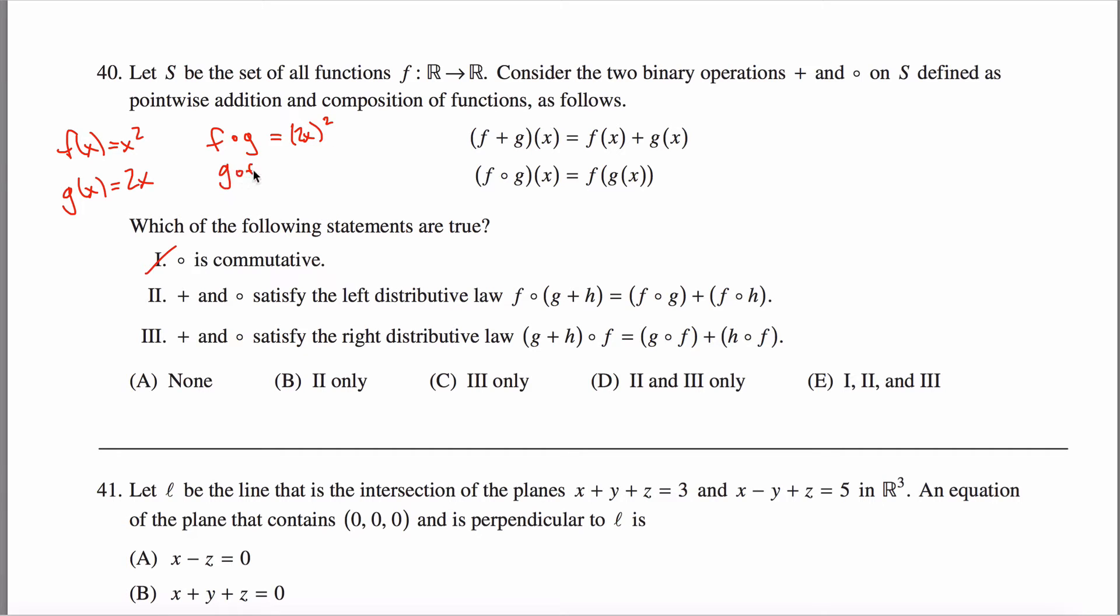Whereas g of f would be this guy, except if I see an x, I replace it with this x squared guy, so it's 2x squared. This is 4 times x squared, whereas this is 2 times x squared, they're not the same. Function composition is not commutative, there's one of many examples that will show you that's not true.